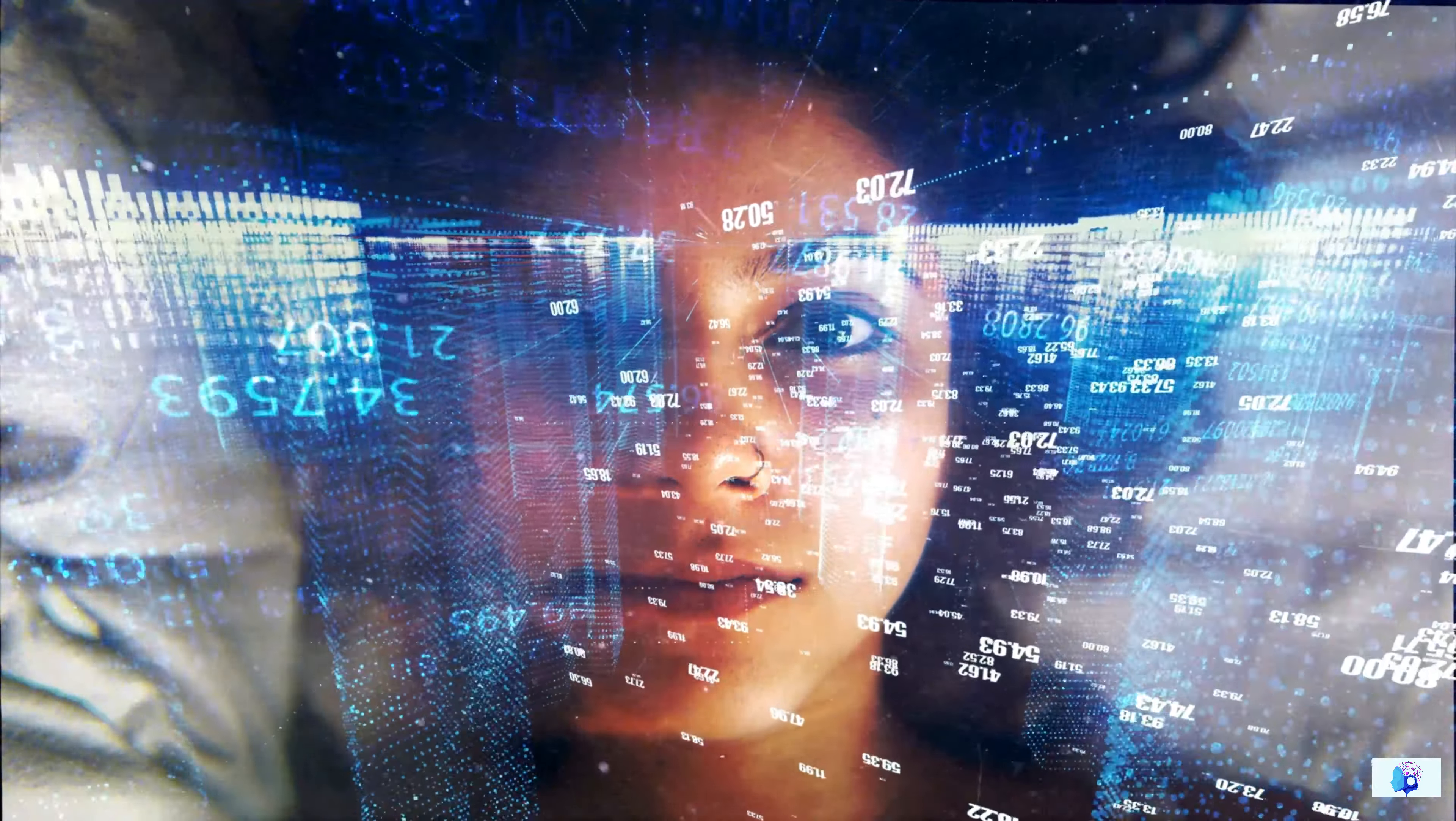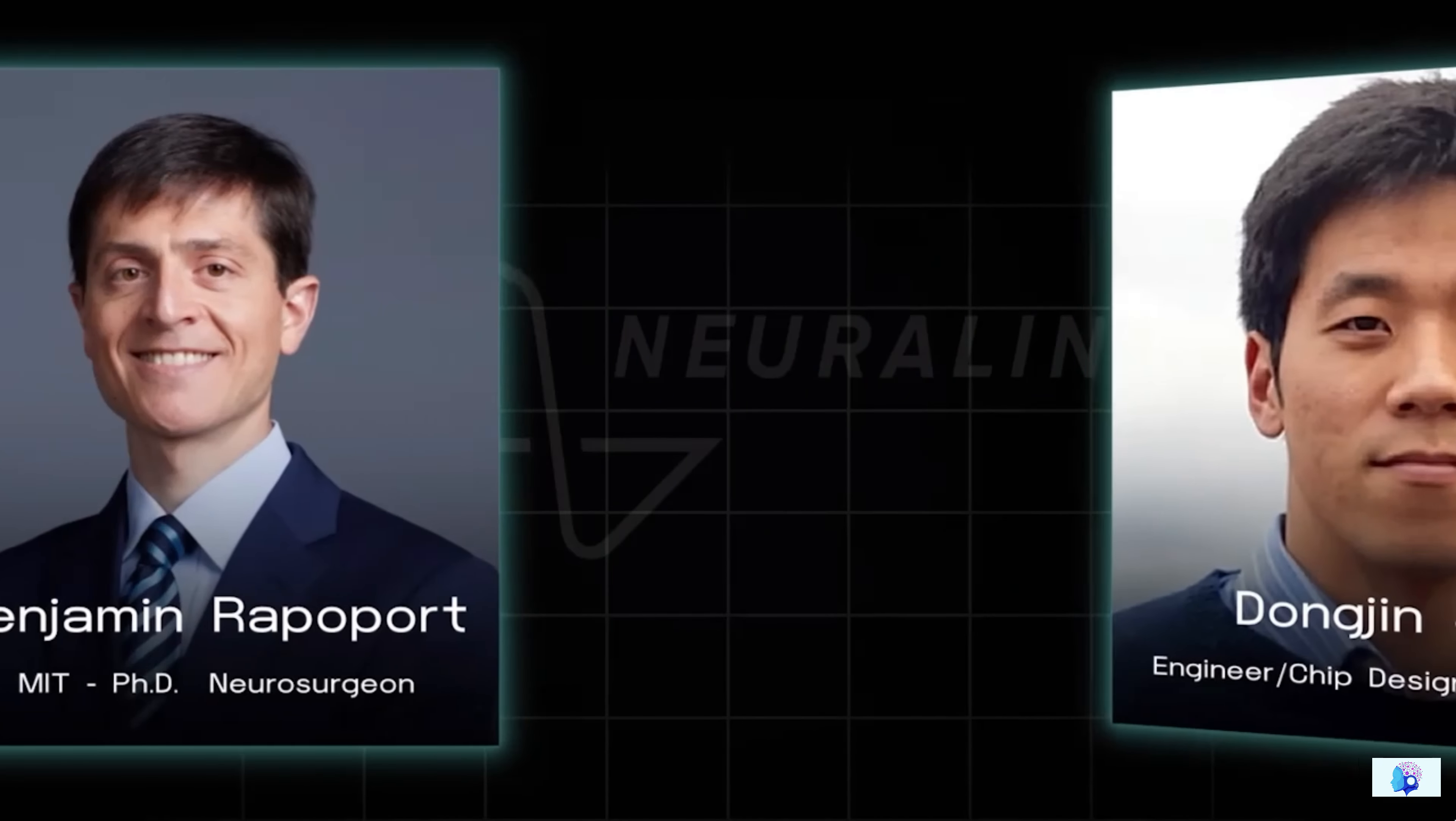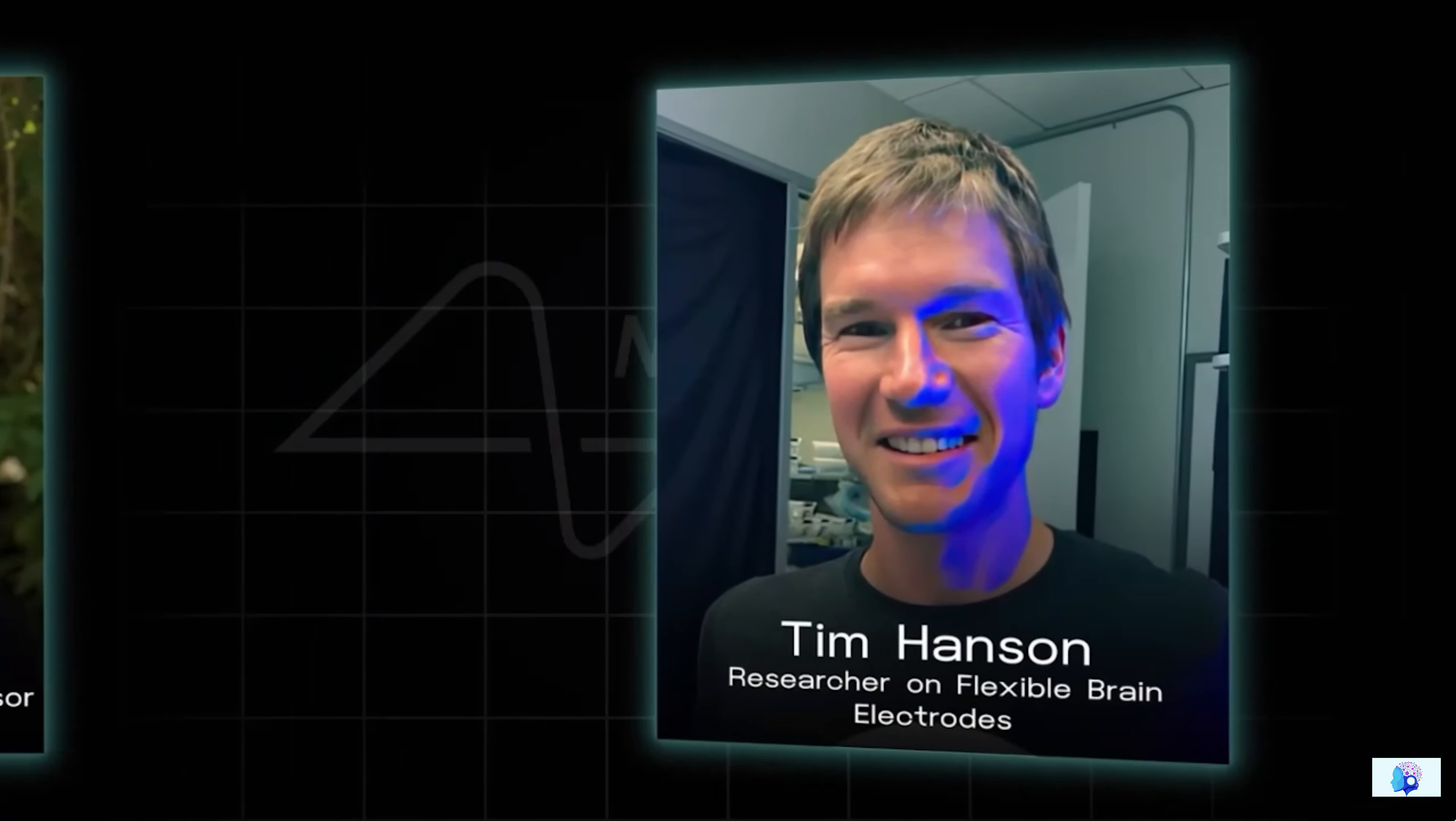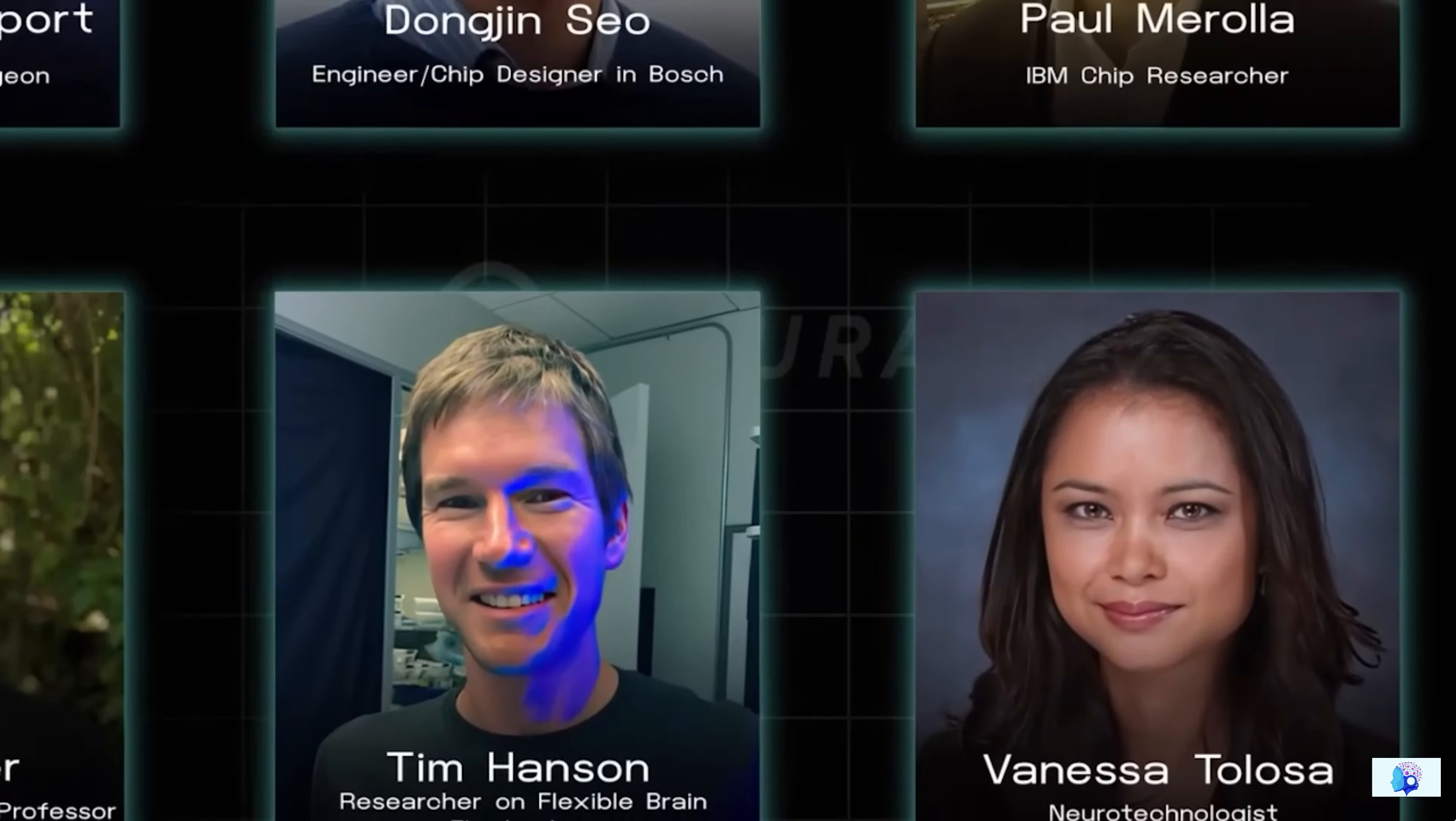And how do these masters actually look? To explain this, we want to show you their bio data. So those eight people were brain machine interface geek and biomedical engineer, Max Hodak, neurosurgeon Benjamin Rappaport, who has a PhD from MIT, the world's second most popular engineering company, Bosch, and the chip designer and engineer Dong Jin Soho, the top IT company, IBM's chip researcher, Paul Merola, the neuroscientist from Caltech University, Philip Sabes, the biology professor from Boston University, Tim Gardner, the researcher on flexible brain electrodes, Tim Hansen, and the neurotechnology's Vanessa Tolosa. And this was the winning team of Elon Musk's, which he created himself.